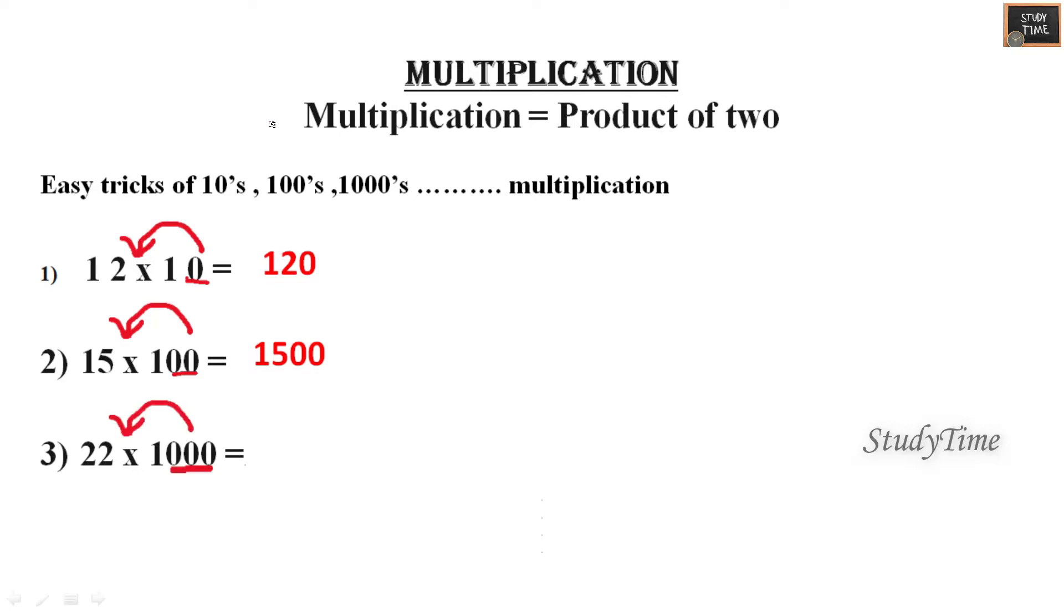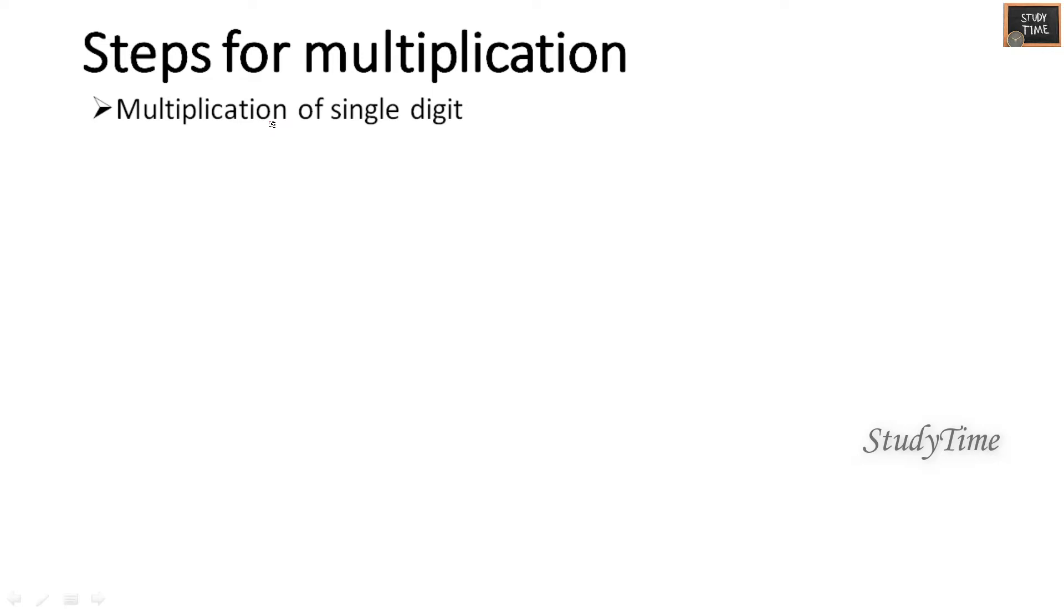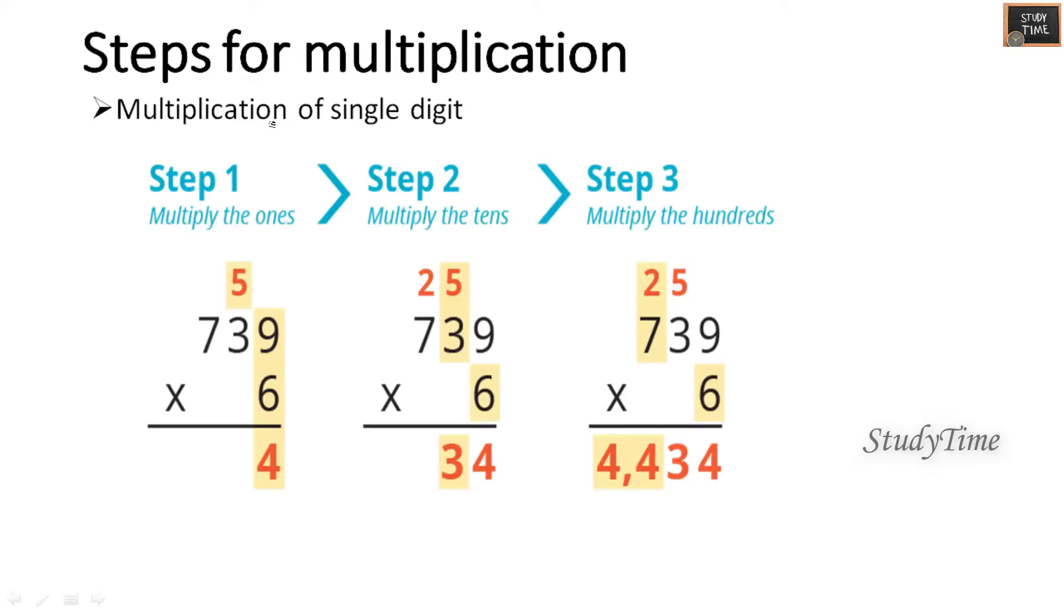Steps for multiplication of single digit: first you have to multiply with the first number, then with the second number, and then with the third number.